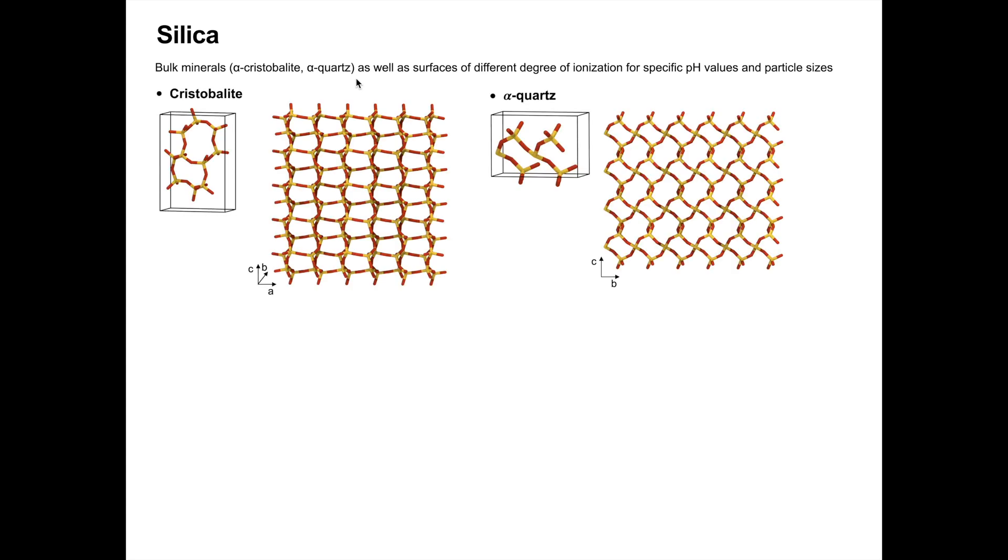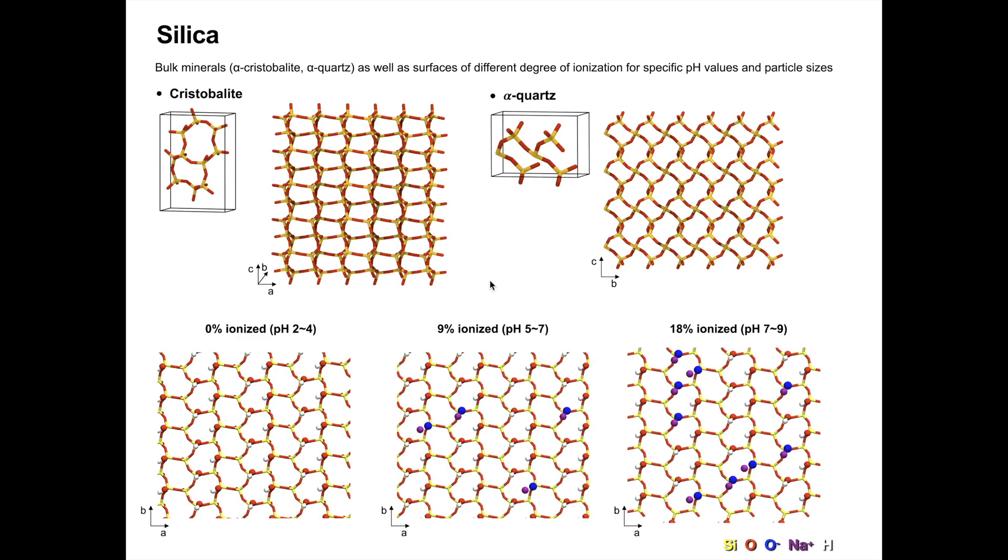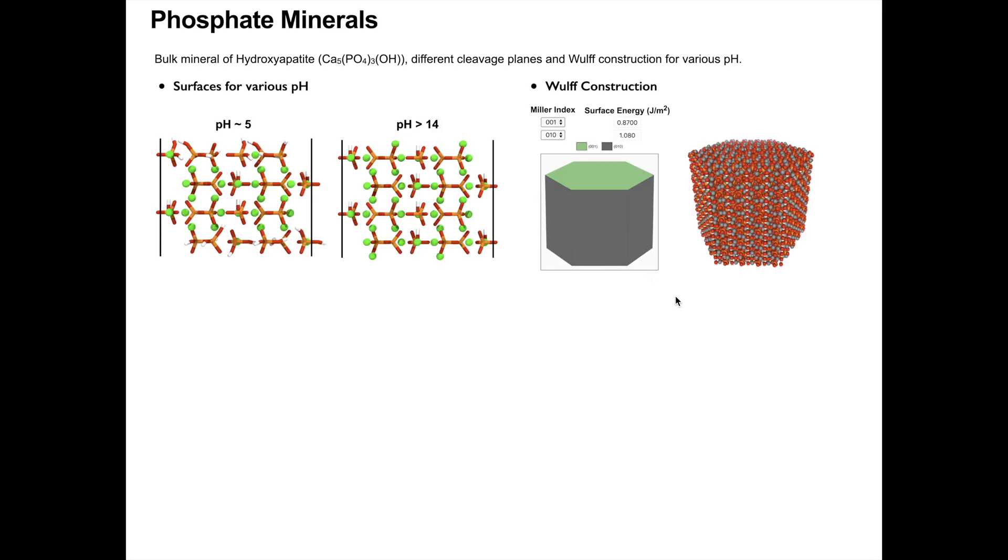The silica class provides two polymorphs including alpha-cristobalite and alpha-quartz. Nanomaterial Modeler provides options to control the surface chemistry of these materials. The phosphate mineral hydroxyapatite is provided with different cleavage planes for Wulff construction for three pH ranges.